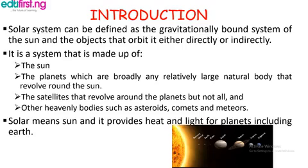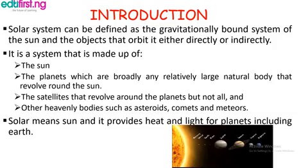We have eight popular planets: Mercury, Venus, Earth, Mars, Jupiter, and so on. The Earth, which we are living in, is one of those planets. We also have satellites that revolve around the planets, though not all planets have satellites. We also have other heavenly bodies such as asteroids, comets, and meteorites. 'Solar' means Sun, and it provides heat and light for planets, including the Earth.